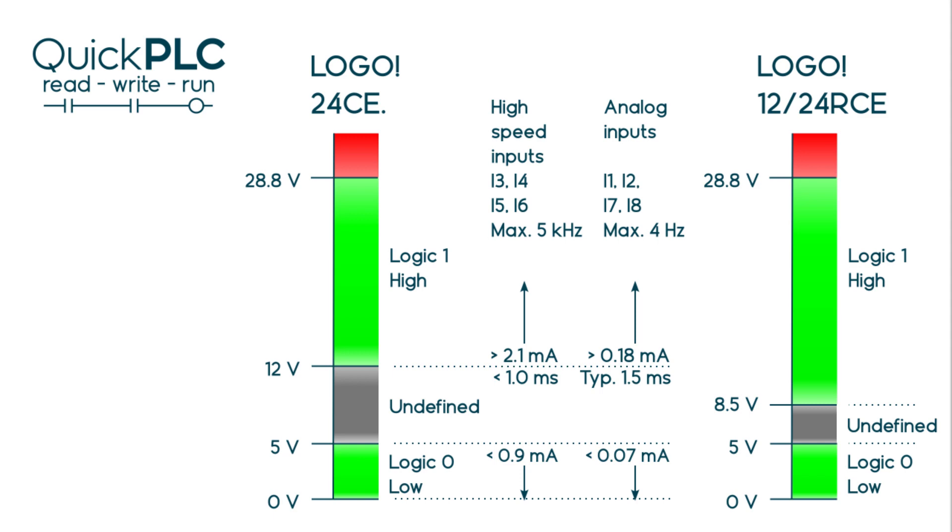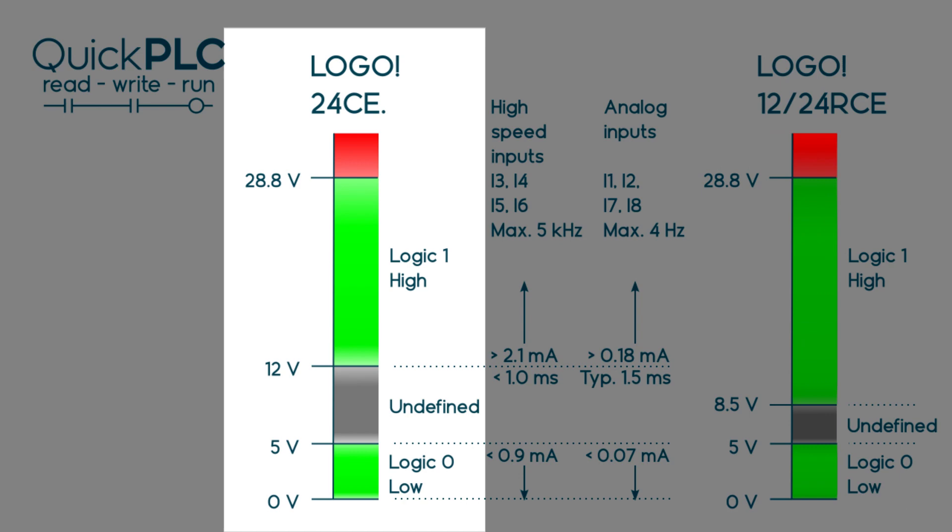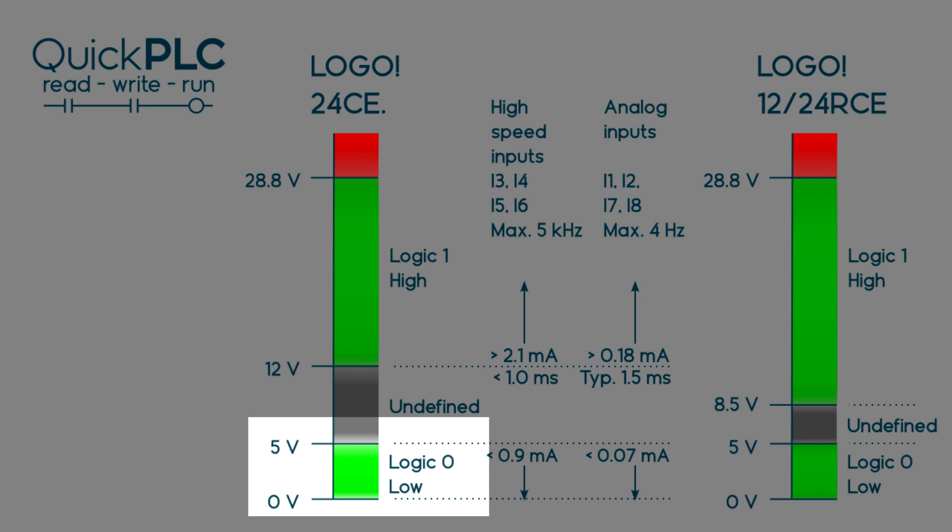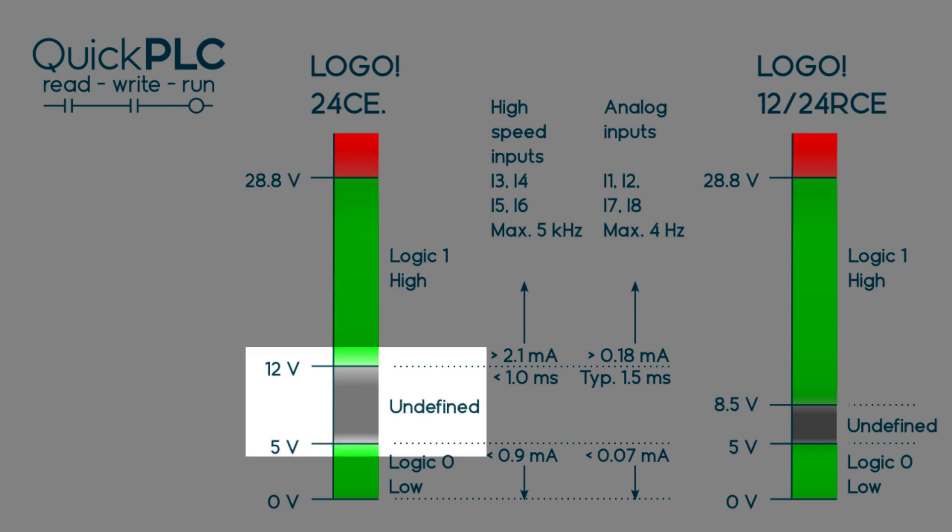This slide shows details on the DC inputs. The 24 CE has 24 volt inputs and will read a logic 0 for any input voltage less than 5 volts. A voltage between 12 volts and 28.8 will be read as a logic 1. Voltage between 5 volts and 12 volts will give an undefined result. It could read as 0 or it could read as a 1. An input greater than 28.8 volts may permanently damage the input.